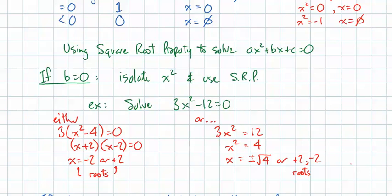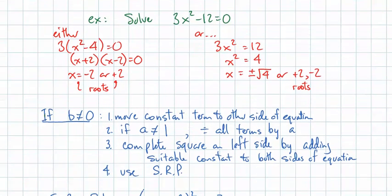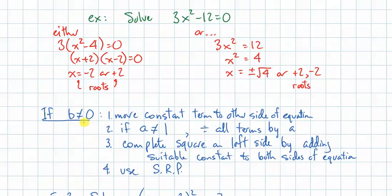Now, most of the time, b won't be 0, and there'll be more work to do. So, let's look at that. If b isn't 0, here's a set of steps that you can take. Move the constant term to the other side of the equation. Then, if a isn't 1, divide all the terms by a.